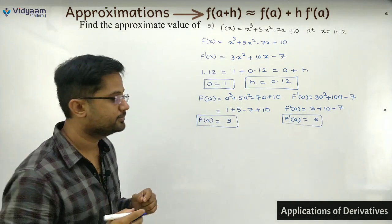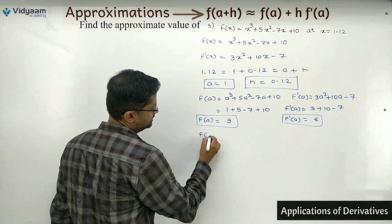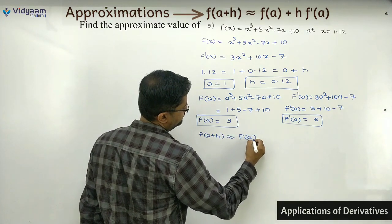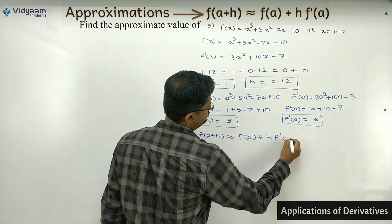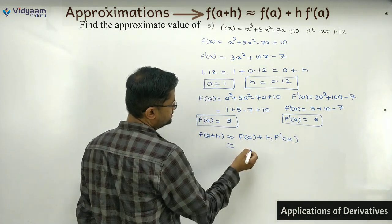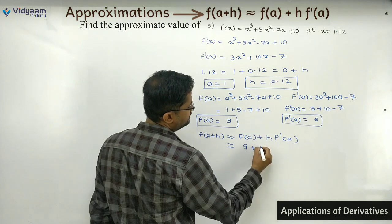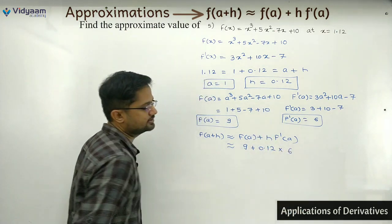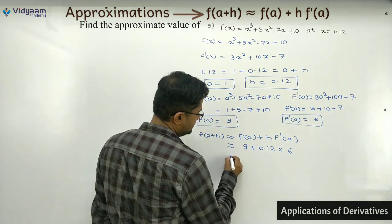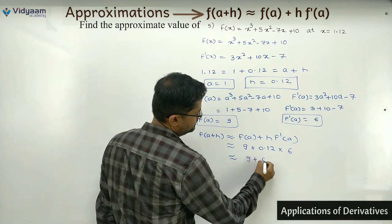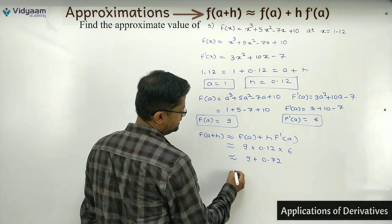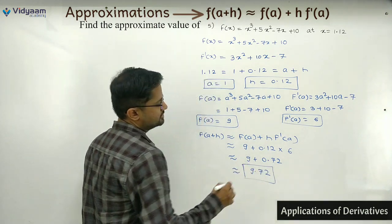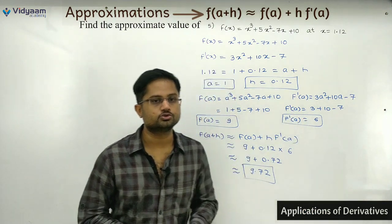Now apply the master formula: f(a + h) ≈ f(a) + h·f'(a). Substituting: f(a) = 9, h = 0.12, f'(a) = 6. So 9 + 0.12 × 6 = 9 + 0.72 = 9.72. My answer comes out to be 9.72.